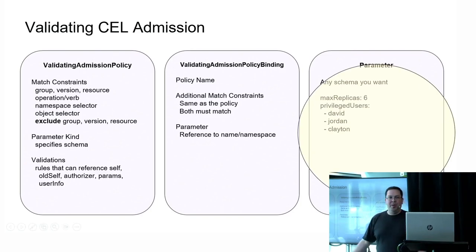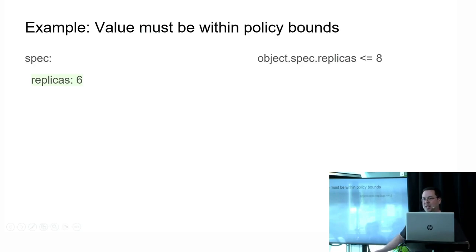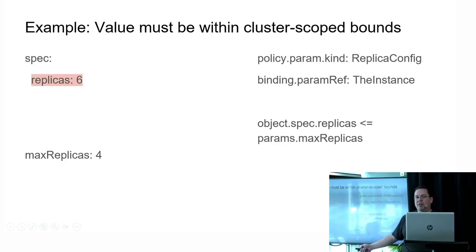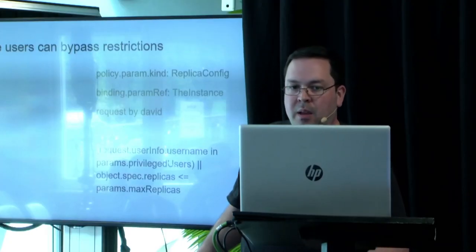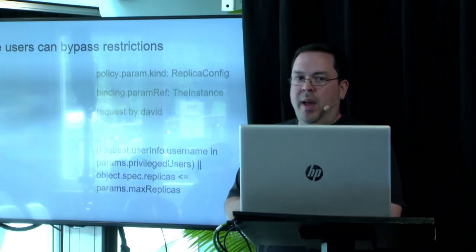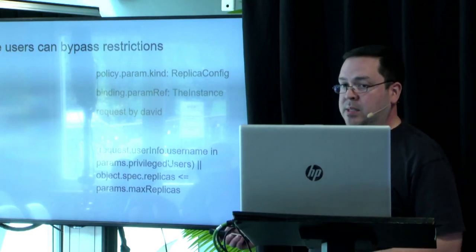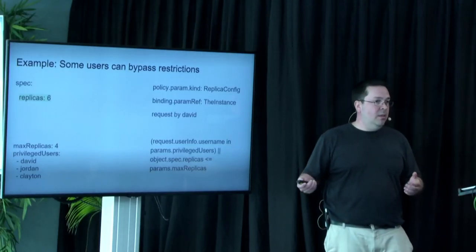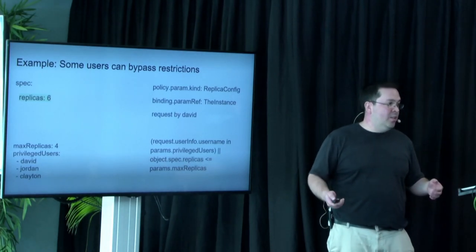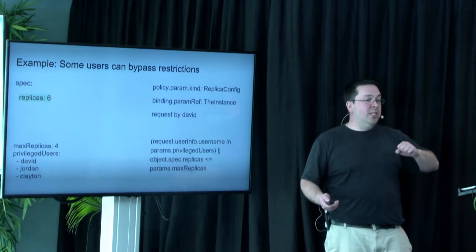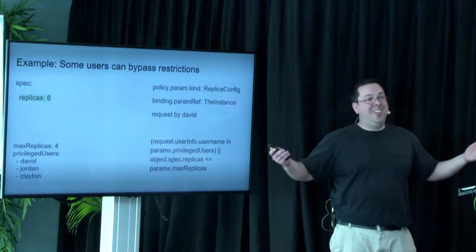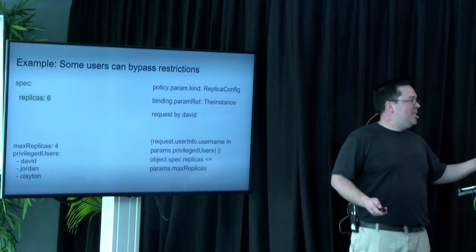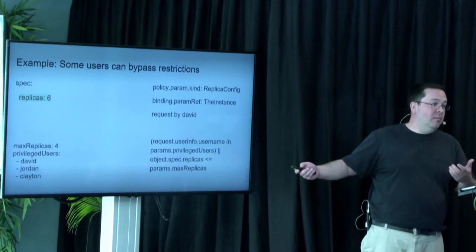You have the simple example, hard coding it right in there. Then you have another example where you have a parameter CRD created separately, so you can manage them independently. And then this is a slightly more interesting one. You have some users who are special, so I'm looking at the request, and depending on who made it, that request is going to be allowed or not. Because the request is by David, it's going to work, because David is awesome. He gets to bypass the requirement. But everybody else is stuck with the requirement.